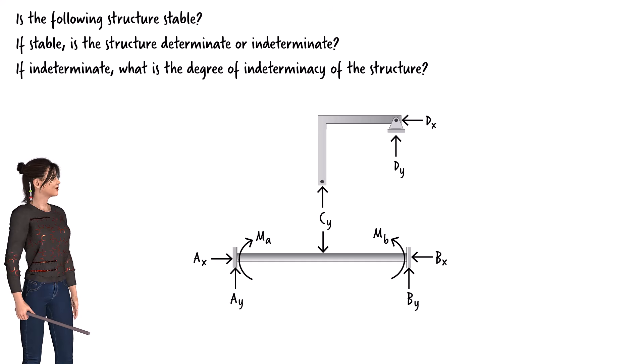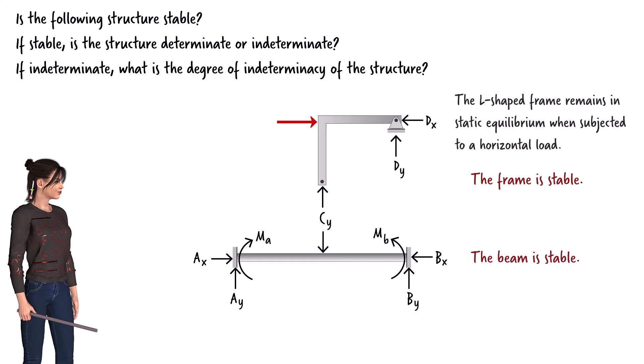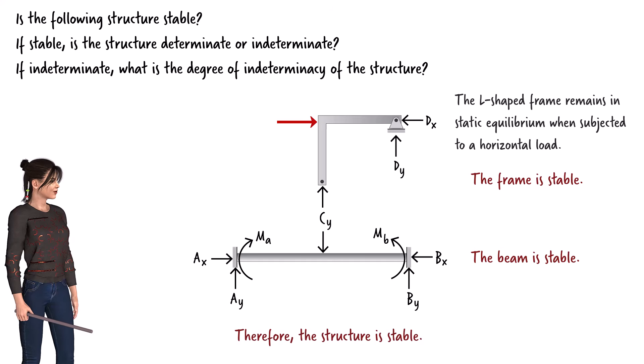So, when we subject the frame to a horizontal load, the presence of this reaction force ensures that all three equilibrium equations are satisfied. Therefore, no instability arises in the frame. Since the beam is fixed at both ends, we know it is stable. Which means, the structure as a whole is stable.